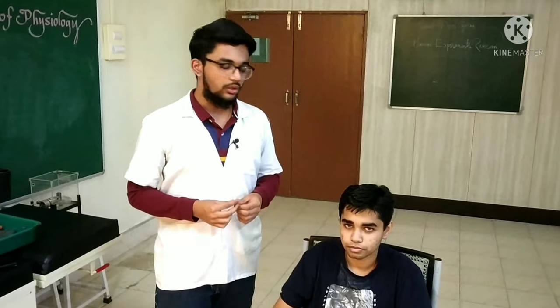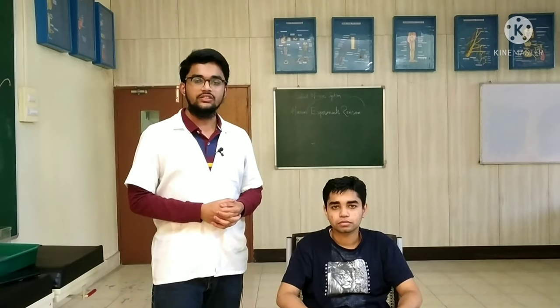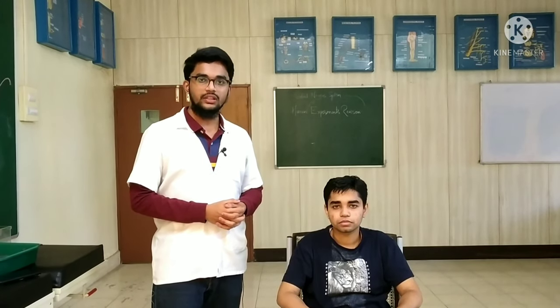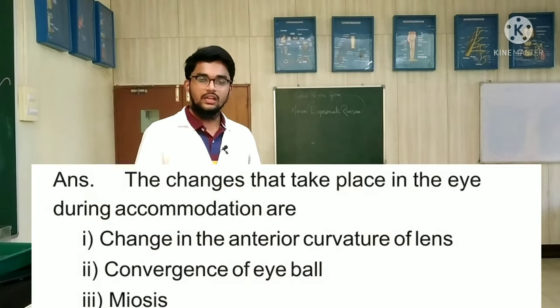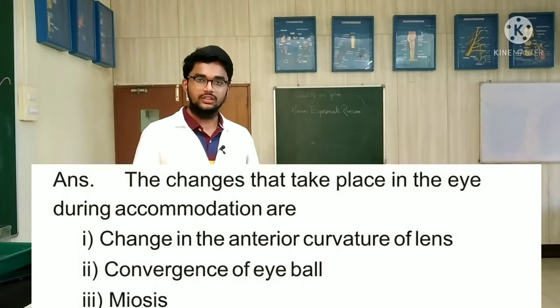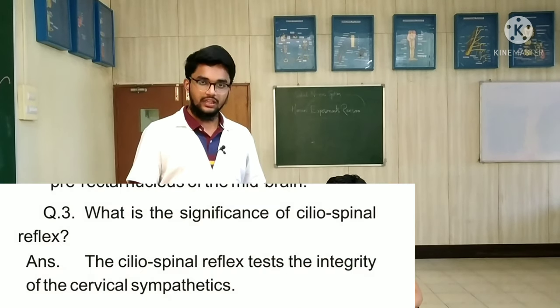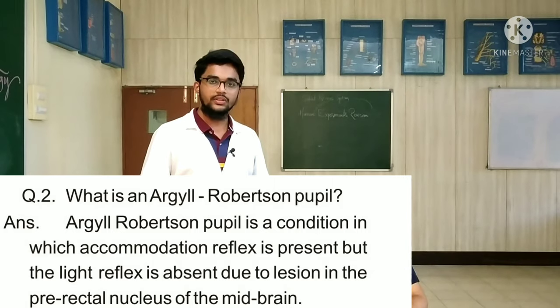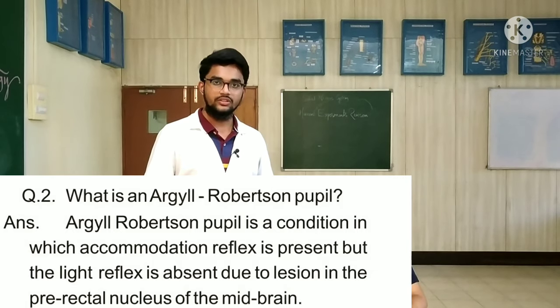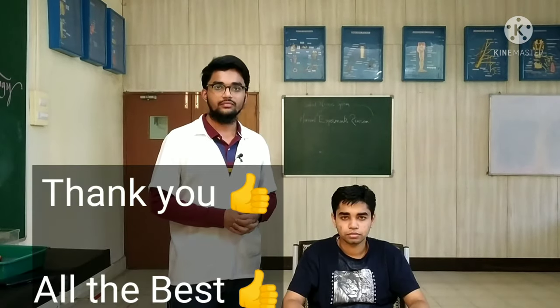Both conjunctival and corneal reflex have the same responses because both have the same afference, which is the trigeminal nerve, and the same efference, which is the facial nerve. Changes that take place during the accommodation reflex are convergence of the eyeball, change in the anterior curvature of the lens, and meiosis, which is pupillary constriction. Celiospinal reflex is used to check the integrity of the cervical sympathetics. Argyll Robertson pupil is a condition in which light reflex is absent and accommodation reflex is present.